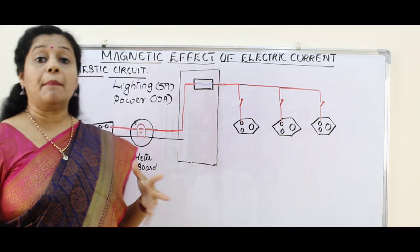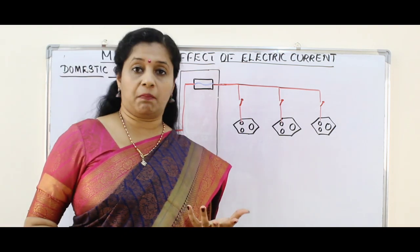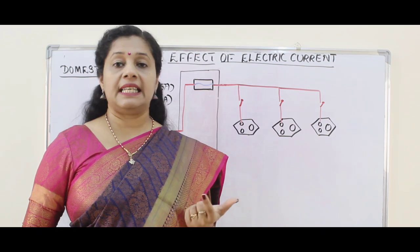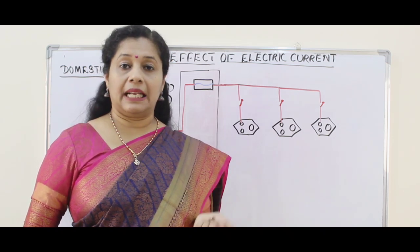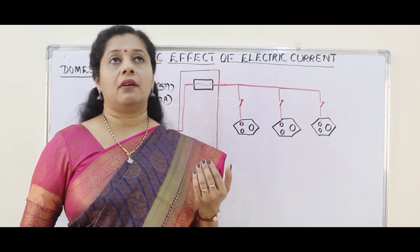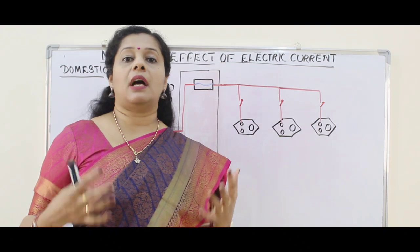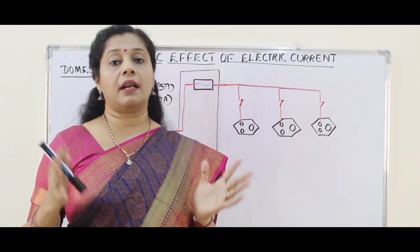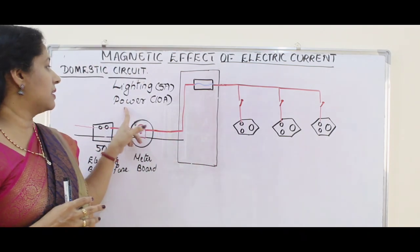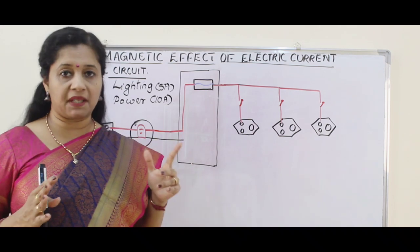The power circuit involves all the gadgets which require more power — heavy gadgets like a room heater, geyser, electric stove, electric oven, refrigerator, and air conditioner. All these are drawing a large amount of current, so they are all connected using a different connection called a power circuit. So there are two circuits: lighting circuit and power circuit.